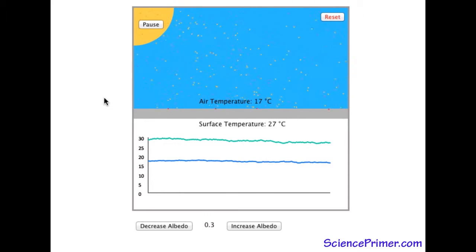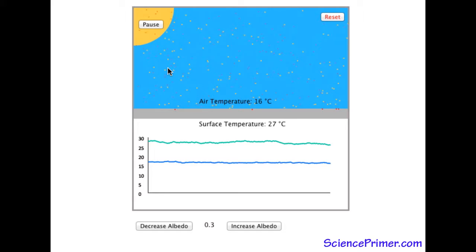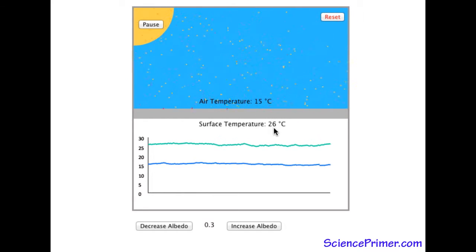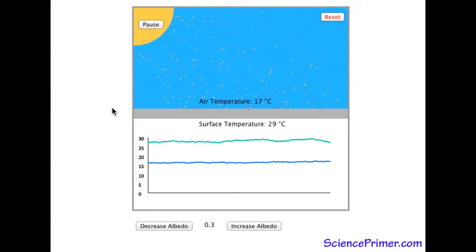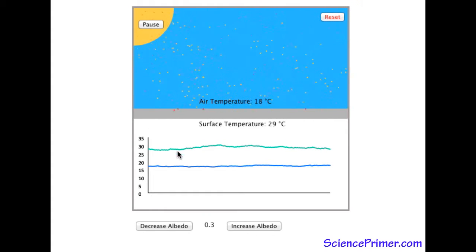As the surface warms and the difference in temperature between the surface and the overlying air grows, energy in the form of heat radiates from the surface back up into the overlying air. This radiation is shown as faint red dots floating up off the surface. The graph shows changes over time of both the air and surface temperature.